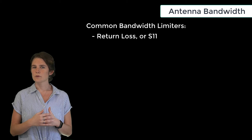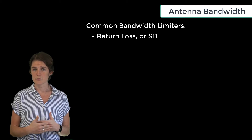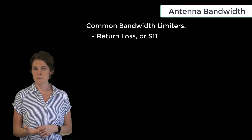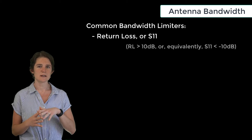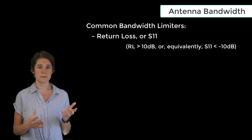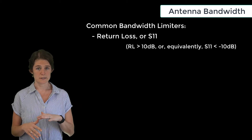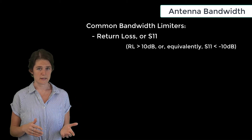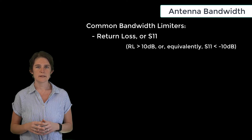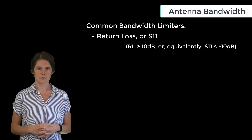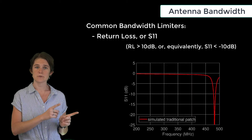A typical rule of thumb threshold for an acceptable return loss is 10 dB. So if the return loss is above 10 dB, or if S11 is below negative 10 dB, an antenna is typically considered to have acceptable return loss.